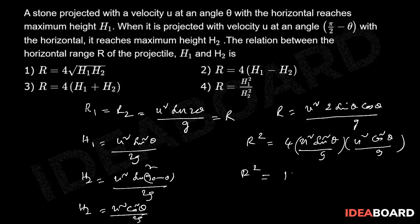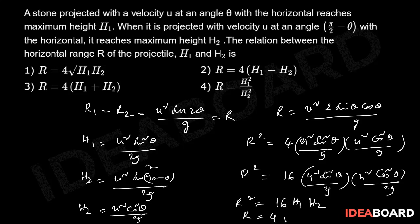R squared equals 16 times u squared sine squared θ by 2g times u squared cos squared θ by 2g. Therefore, R squared equals 16 h1 h2. Then R equals 4 times root h1 h2. So, one is the correct option.